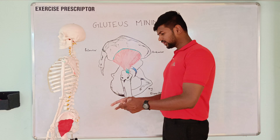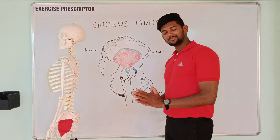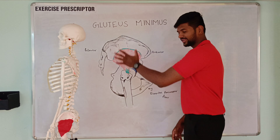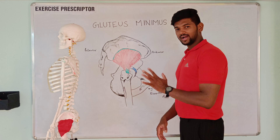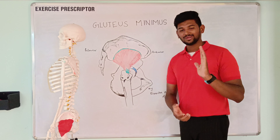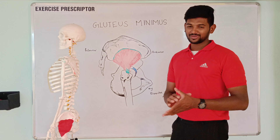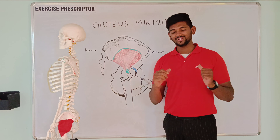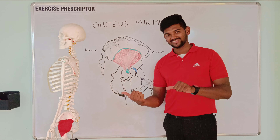Why is this muscle called gluteus minimus? Because it is presented over the gluteal region and it is smaller than the gluteus maximus and the gluteus medius, so it is called gluteus minimus. Welcome to the XS Prescriptor Scientific Series of Muscles. This is Azharuddin. Let's get into it.